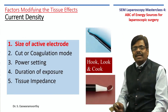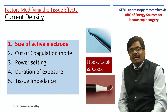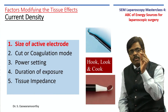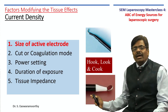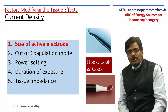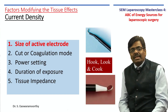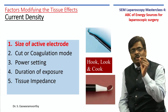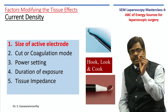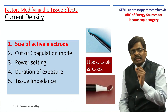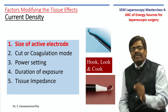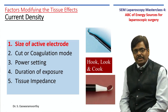For example, in laparoscopy, whether you use a small hook, the back of a spatula, or a curved dissector — which one gives a better, more precise diathermy effect? The hook, because of its smaller surface area. The size of the active electrode does matter.